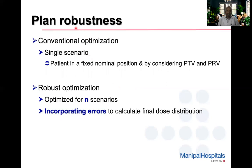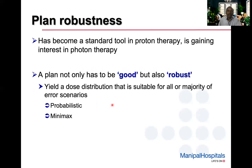Moving from dose metrics, we come to plan robustness. In conventional optimization, a single scenario is considered — the patient in a fixed nominal position. In robust optimization, different error scenarios are incorporated to calculate the final dose distribution. It has become a standard tool in proton therapy and is also gaining interest in photon therapy. Some photon planning systems are also incorporating plan robustness tools.